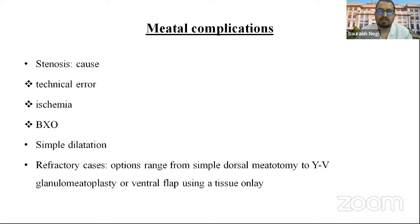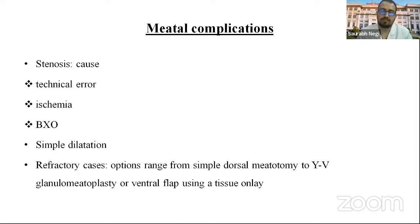Meatal complications include meatal stenosis, which is related to technical errors, ischemia, or BXO changes. Initially we can go for simple dilation. For refractory cases, options range from simple dorsal meatotomy to YV-plasty, glanulomeatoplasty, or ventral flap using the tissue-only technique.